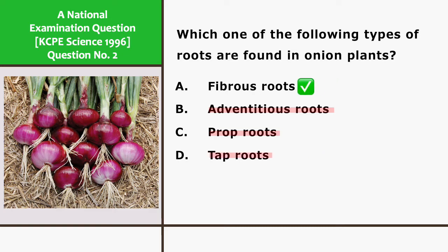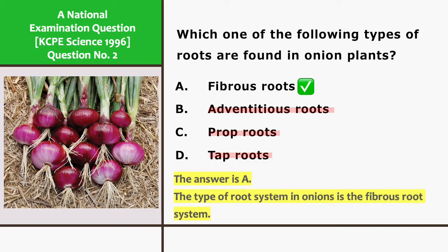The answer is A. The type of root system in onions is the fibrous root system.